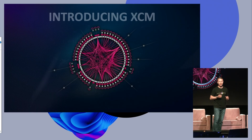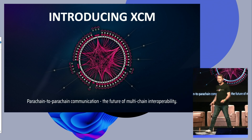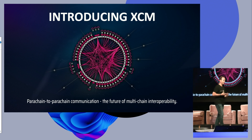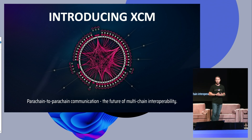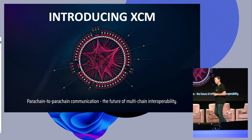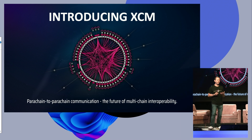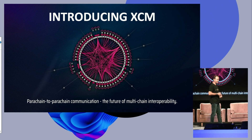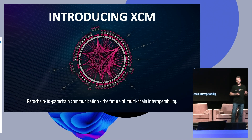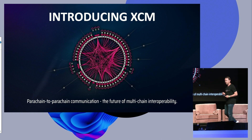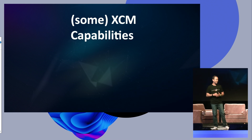Let me talk to you a little bit about cross consensus messaging. So what is cross consensus messaging, and why does it make Polkadot one of the best ecosystems to build on? Cross consensus messaging is just parachain to parachain communication. The key here is that it's secured by the relay chain, and that's what gives parachains superpowers. This is what drew us to build on Moonbeam and on Polkadot. We can also just call it XCM — it's easier to say.